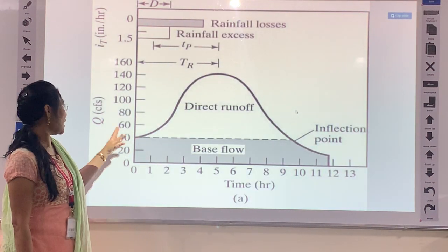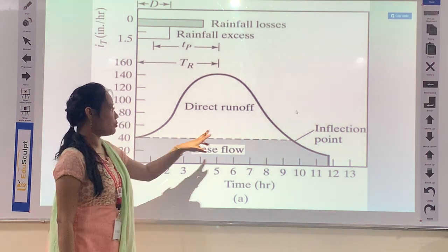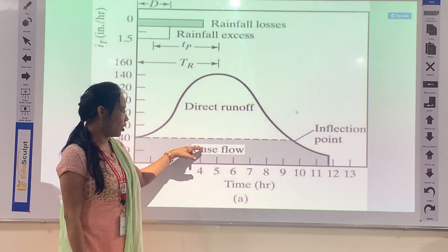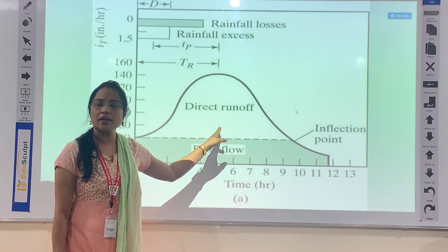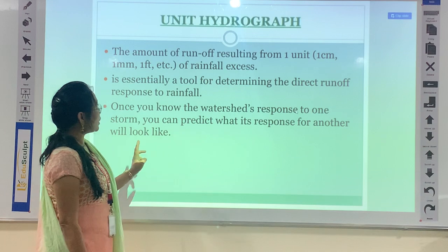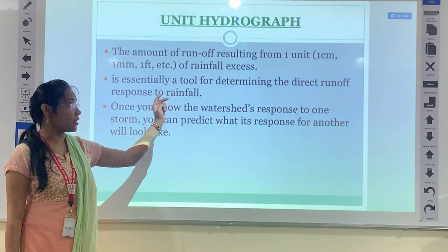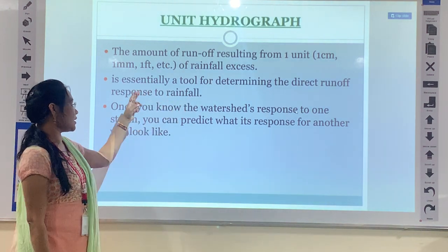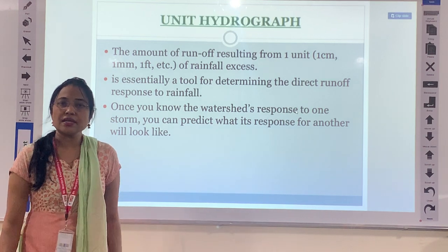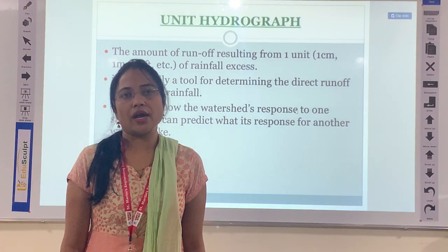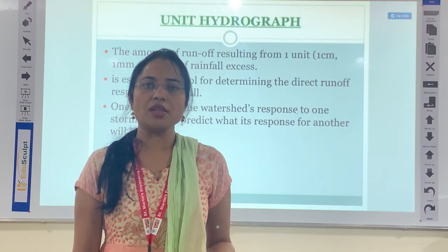Here we have a graph between time and discharge representing only one centimeter of rainfall. Joining the point of rise and the point of end — these two inflection points — separates the groundwater or base flow from the direct runoff produced by the rainfall. The unit hydrograph represents the runoff resulting from one unit of rainfall — one centimeter, one mm, etc. — and is a tool for determining the direct runoff response to rainfall. Once you know the watershed's response to one storm, you can predict its response to another. If a watershed's unit hydrograph for one centimeter can be estimated, it can be extended to any centimeter of rainfall.